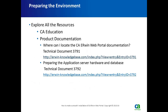To install Erwin Web Portal, we need to prepare the environment. The first step is to explore all the resources, which include CAA education and product documentation. The two main documents — where to locate CAA Erwin Web Portal documentation, and how to prepare the application server hardware and database — are available from the Erwin Knowledge Base website.